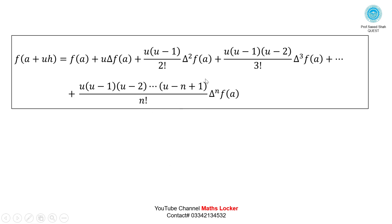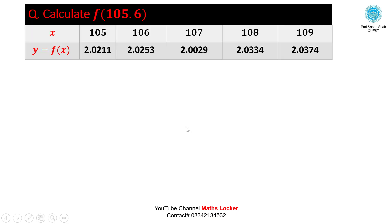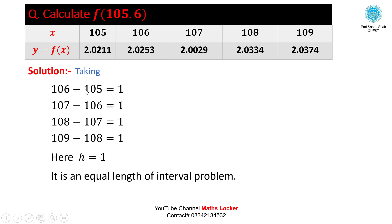Applying this formula to a particular problem: calculate f(105.6). We have independent variable x and y = f(x). The differences between x values — 106−105, 107−106, 108−107, 109−108 — are all 1, so h = 1, confirming this is an equal length of interval problem.